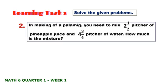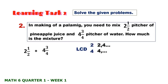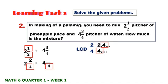Number 2: In making a palamig, you need to mix 2 and 1 half liters of pineapple juice and 4 and 3 fourths liters of water. How much is the mixture? We need to add 2 and 1 half and 4 and 3 fourths. The LCD of 2 and 4 is 4. So: 4 ÷ 2 × 1 = 2; 4 ÷ 4 × 3 = 3. After adding and simplifying, the answer is 7 and 1 fourth.